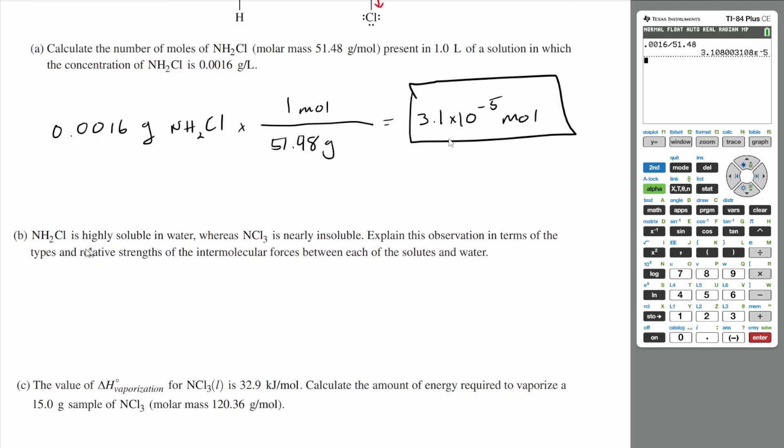So NH2Cl is highly soluble in water because since it has a really high dipole moment, it's going to have strong intermolecular forces, which lets it be very soluble in water. And NCl3 is nearly insoluble because, although it does have a dipole moment, it's not very strong. So although it's going to be slightly soluble, it's not going to be very soluble.